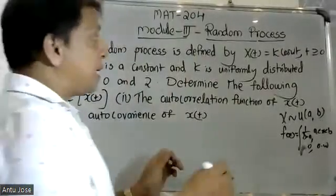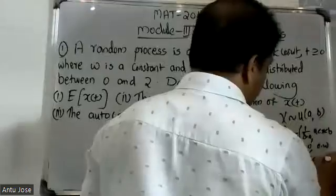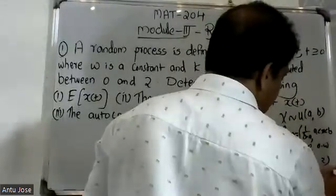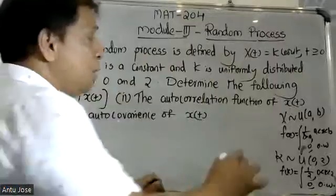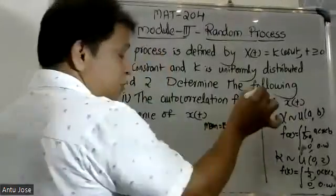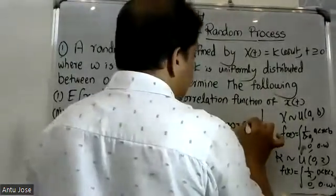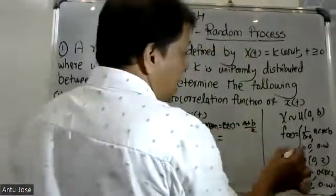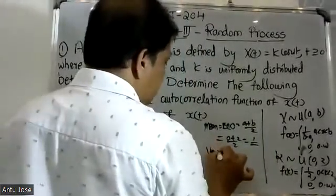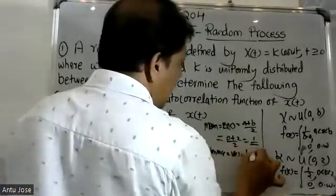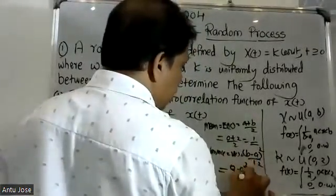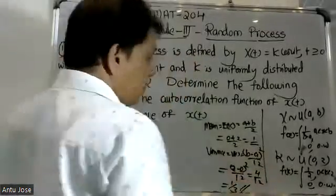Since k is uniformly distributed U(0, 2), the PDF is f(k) = 1/2 for 0 < k < 2, and 0 otherwise. For a uniform distribution, the mean is E[k] = (a+b)/2 = (0+2)/2 = 1. The variance is Var(k) = (b−a)²/12 = (2−0)²/12 = 4/12 = 1/3.